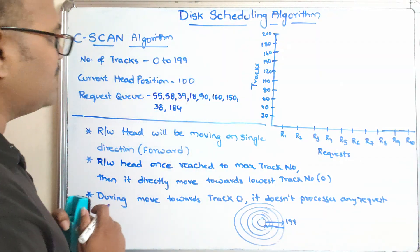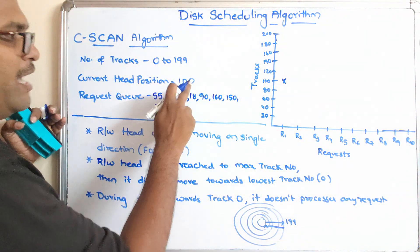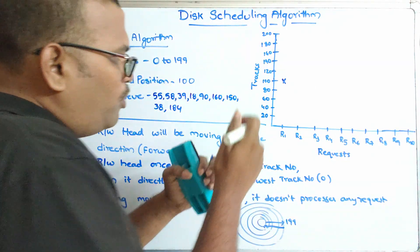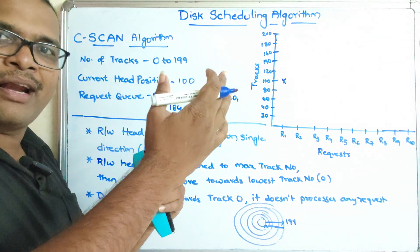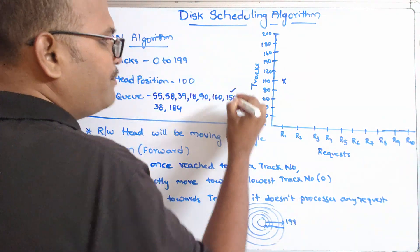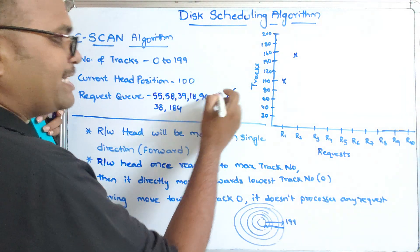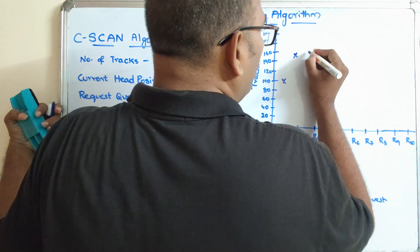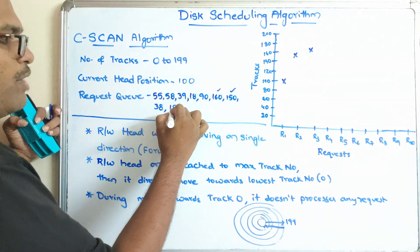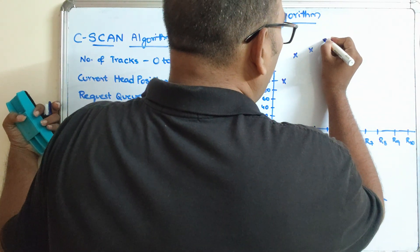Let us see an example. The initial position is at 100. It will move only towards the forward direction. From 100, it will process only the requests which are above 100 until it reaches 199. The next request processed is 150, then 160, then 184. It processes requests in the forward direction only.